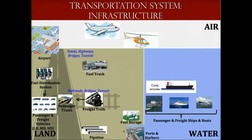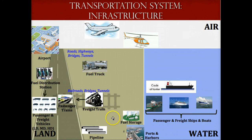There is infrastructure to support all of these different modes of transportation, including airports, roads, highways, bridges, tunnels, fuel stations, railways, pipelines, storage facilities, ports, and harbors. All of these modes of transportation require fuel, and much of this infrastructure is used to transport fuel from one place to another or store it.